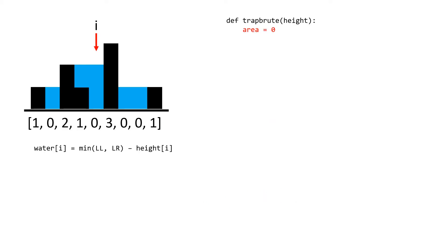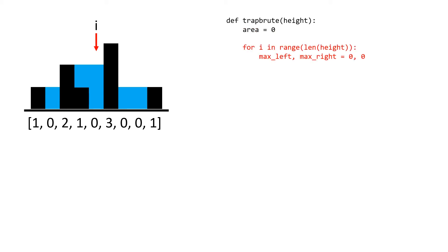Now that we have the formula for calculating the water at a single position, it is straightforward to come up with a brute force solution. For each position we calculate the largest left and the largest right values, apply our formula to get the units of water for that position, and sum this to a running total representing the total units of water the map can hold. We start with an outer for loop iterating through the entire array and create max left and max right variables, initialized to zero, representing the largest left and right bars for a given position i.